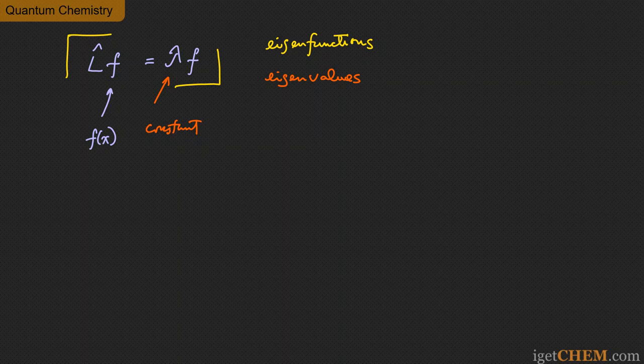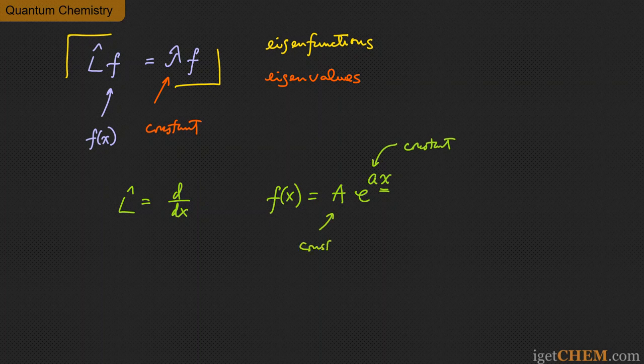I picked this problem because it illustrates what that means in real terms for a particular mathematical function and linear operator. In this case the linear operator L is d/dx. The problem is not asking you to solve the eigenvalue system — it's really asking you to show that this eigenvalue system is solved by the particular function f(x) = A times e to the power ax, where small a is a constant and big A is another constant, meaning neither is a function of x. What you need to do is take L, operate it on f(x), and show that the result equals f(x) multiplied by some eigenvalue. So let's do that.